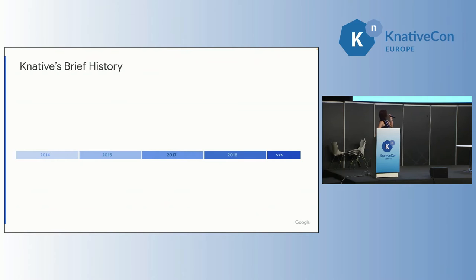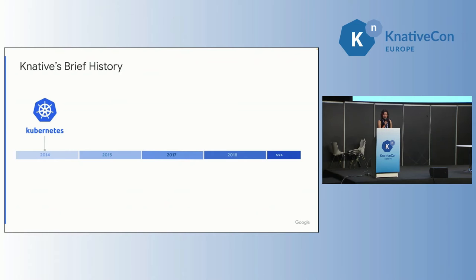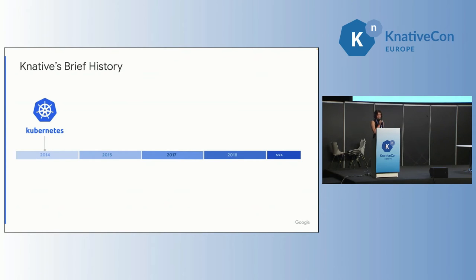It's kind of impossible to talk about Knative without mentioning Kubernetes, and that's why we're here at KubeCon. In 2014, when Google open sourced Kubernetes, it fundamentally changed how organizations manage their infrastructure, develop and deploy their software. It created this whole new way of building services where development teams could work independently and deploy services super, super fast — faster than ever before.